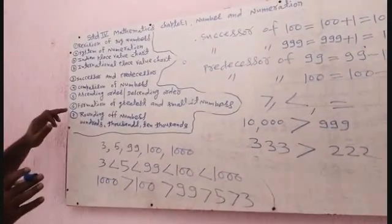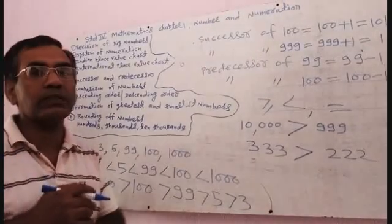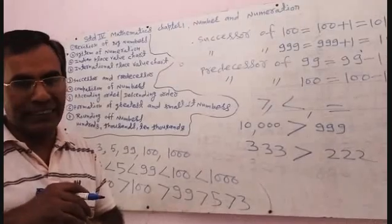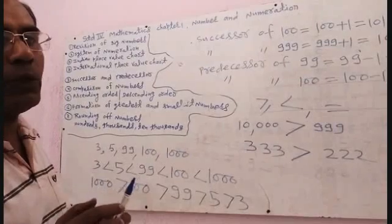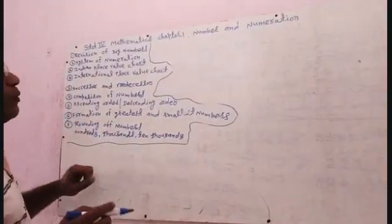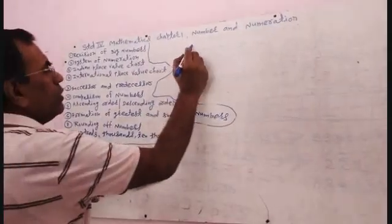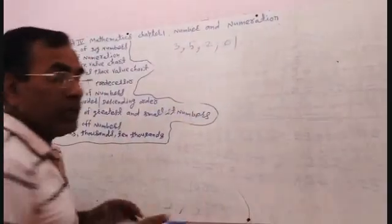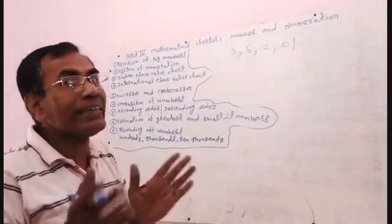Now I am going to teach you topic number six: Formation of Greatest and Smallest Number. You are given different digits and you have to arrange the greatest and the smallest number from them. For example, the digits given are: 3, 5, 2, 0, 1. How can you arrange the greatest number?